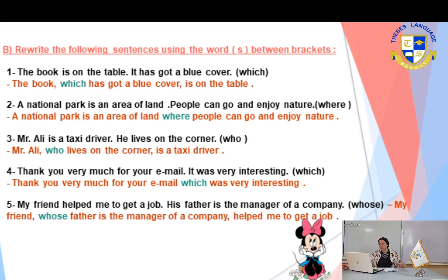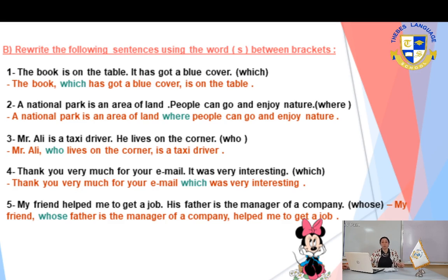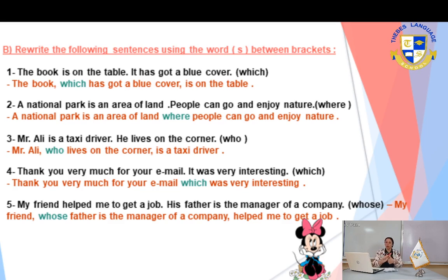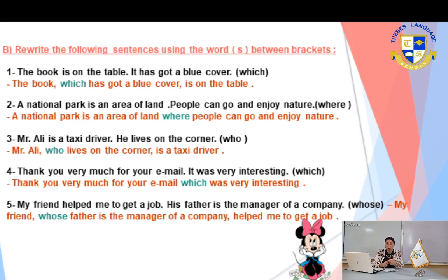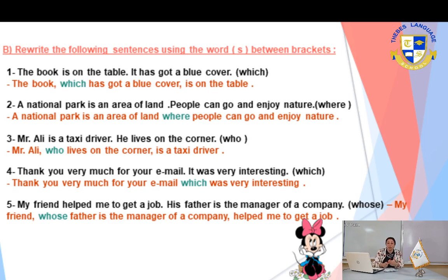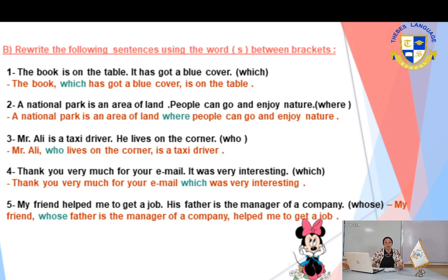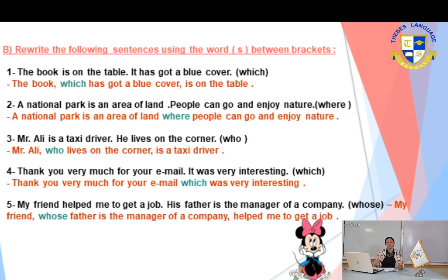Number three: 'Mr. Ali is a taxi driver. He lives on the corner.' Using 'who.' First, underline the noun — 'Mr. Ali.' Then underline the personal pronoun — 'he.' Drop 'he' and put 'who' instead. 'Who lives on the corner' becomes the relative clause, placed directly after the noun. The answer is: 'Mr. Ali, who lives on the corner, is a taxi driver.'